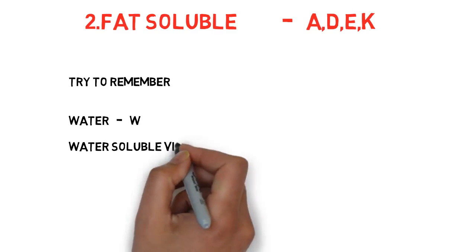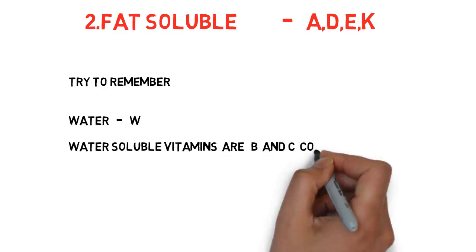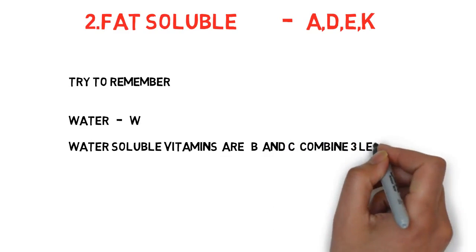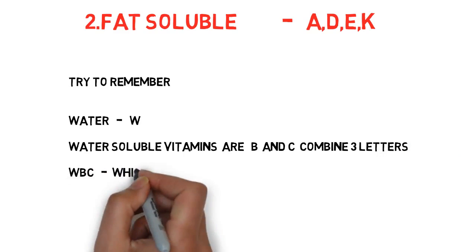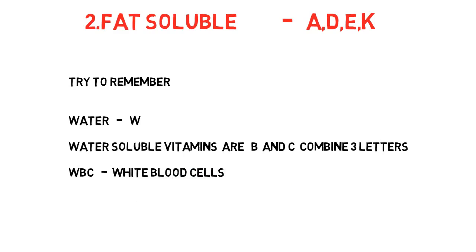First, what is the first type? Water soluble. Try to remember water as W. Water, water soluble vitamins B and C. Now combine these three letters WBC. You know what WBC stands for? White blood cells, so that you can remember easily this trick.